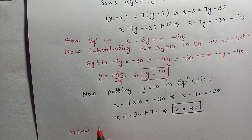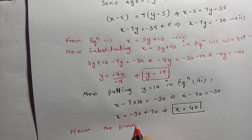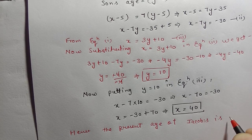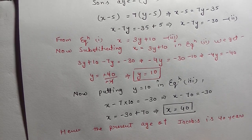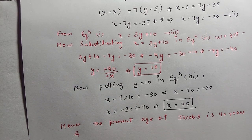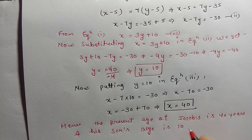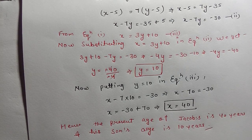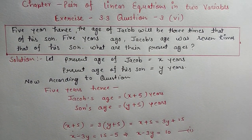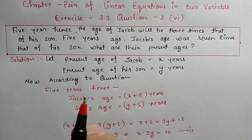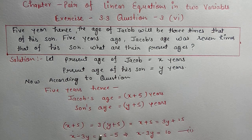Hence, the present age of Jacob is 40 years, because we let Jacob's age be x, and x = 40. And his son's present age is 10 years. This is your final answer. I hope Exercise 3.3 Question 3 was well understood. If you have any doubt, comment below. Please subscribe to my channel and press the bell icon for daily notifications. Thank you.